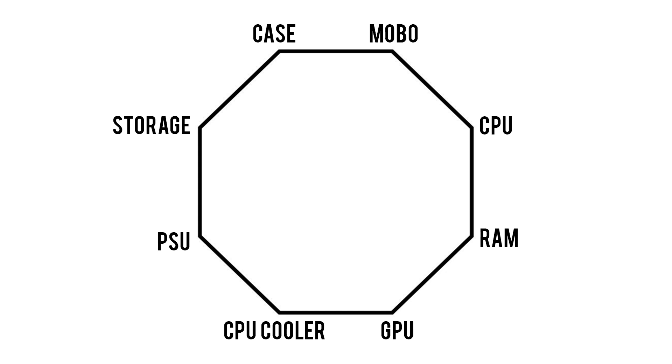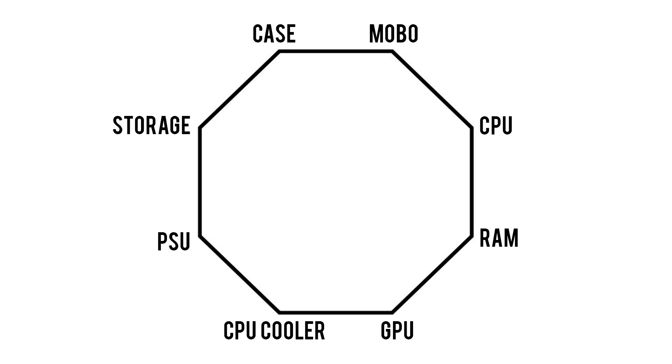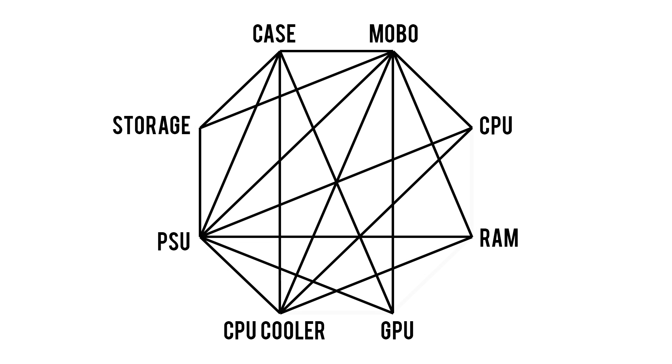In order to thoroughly explain the vast network of PC part association, I've been working with a team of highly intelligent field mice to develop the Octagon of Compatibility. These are the eight main parts you'll most likely need to build your next PC. For the record, I've omitted optical drives because one, they're not nearly as relevant these days, and two, there was no more room in the Octagon. Looking at the chart, you can think of each of these parts as a puzzle piece that needs to fit with certain other parts in the group to make a working computer.